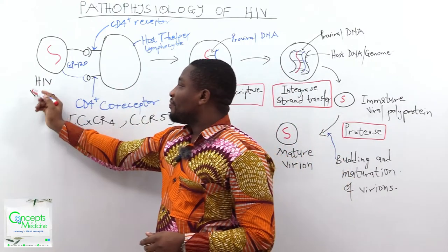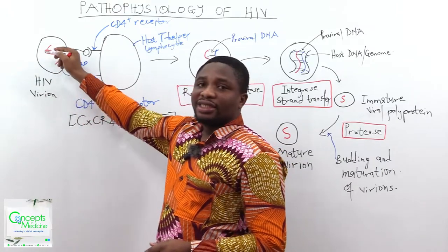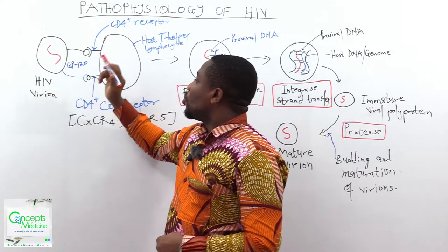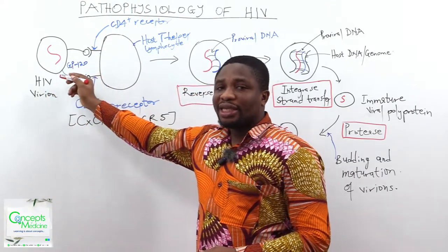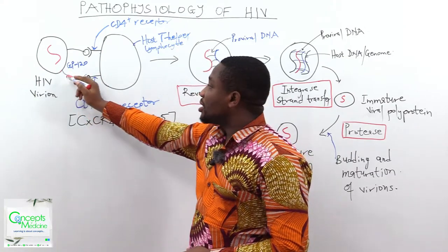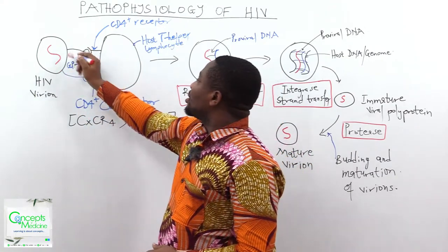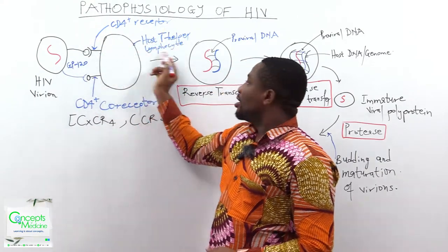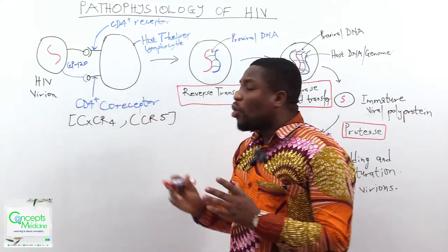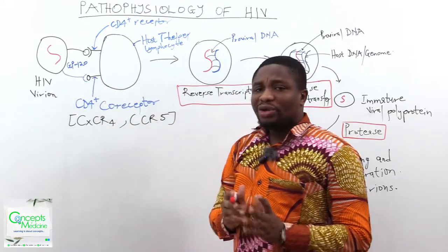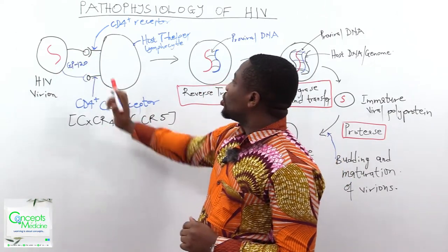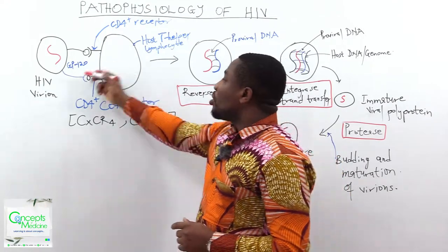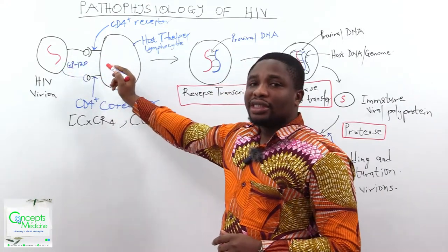So we have the HIV virion, which is containing the single-stranded RNA. The HIV virion, with the help of GP120 — that is glycoprotein 120 — on its outer membrane, binds to the CD4 receptors on the host T-helper lymphocyte, as well as the CD4 coreceptors. You should know that if the virion does not bind to the CD4 receptor and the coreceptor at the same time, it will not be able to enter into the host cell.